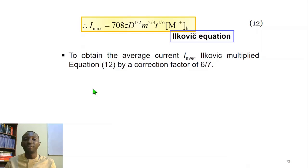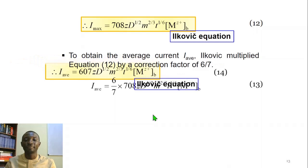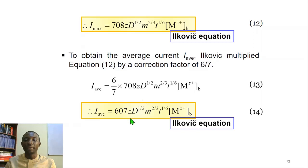To obtain the average current, Ilkovič multiplied the maximum diffusion current by a correction factor of 6/7. That led to equation 13. And equation 13 evaluates to equation 14, which is the average diffusion current in terms of the Ilkovič equation.